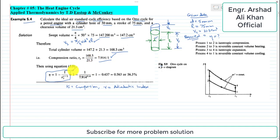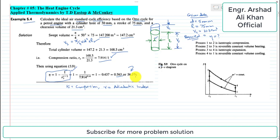Using the ideal air standard cycle efficiency expression derived in the textbook under the Otto cycle topic, we substitute the values: eta = 1 minus 1 over 7.914 to the power of 0.4. This gives 0.563, or 56.3 percent. That is the answer for Example 5.4.